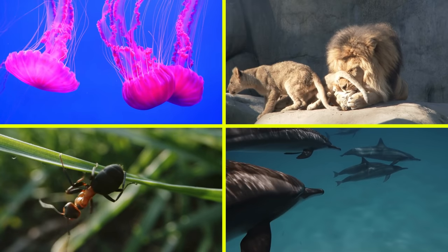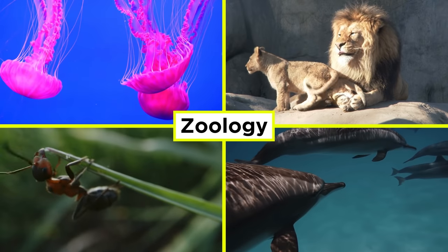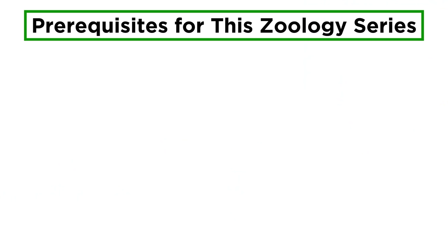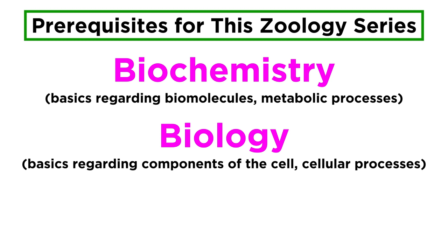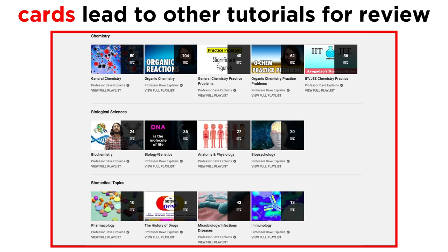Animals have a complicated evolutionary history and a surprisingly diverse variety of survival strategies. To understand all of the intricacies of the animal kingdom, we need to study zoology. Any study of zoology requires at least a basic understanding of biochemistry and biology, as well as certain concepts from anatomy and physiology as a prerequisite. So much of the introductory information in those subjects will be presumed here. But don't worry if you're a little rusty — when an important topic comes up, you can click on the cards that appear in the corner of the screen and jump to a tutorial in one of those playlists, so that you can review those concepts in detail.